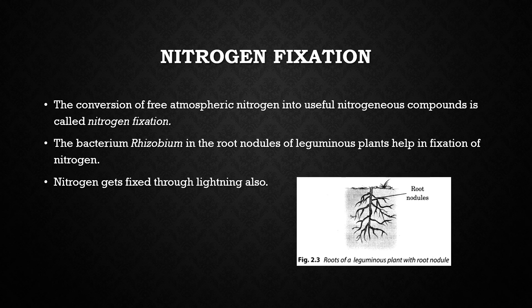The bacterium Rhizobium lives in the root nodules of leguminous plants such as peas, beans, etc. and helps in the fixation of nitrogen. You can also see the picture of root nodules. Nitrogen can also be fixed by lightning and by blue-green algae. So Rhizobium bacteria, blue-green algae, etc. fix the atmospheric nitrogen.